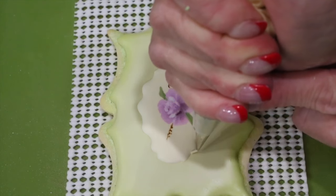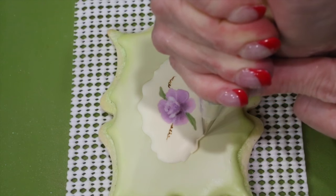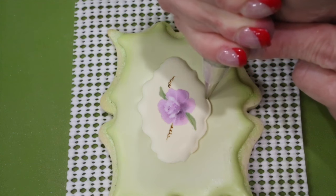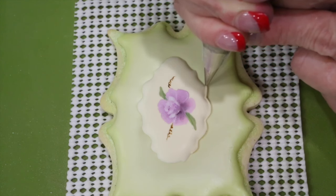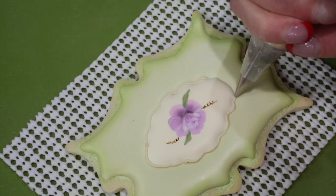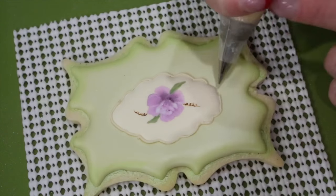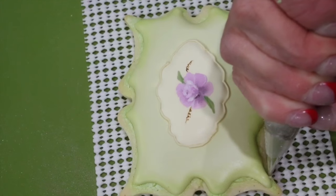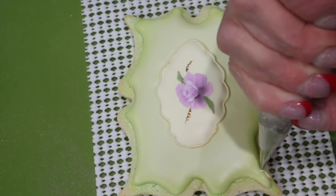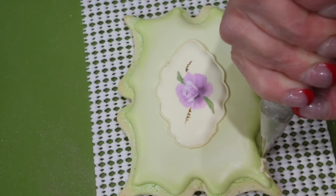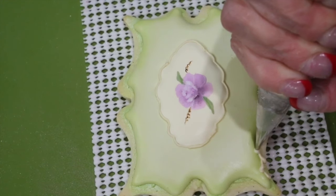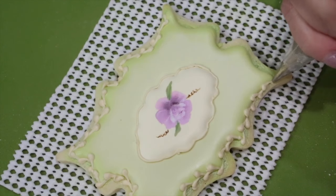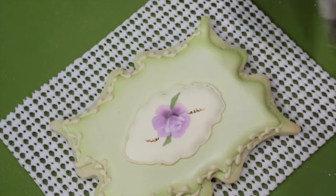Now with the number one piping nozzle and stiff consistency icing, outline the inner plaque. Now add your decorative border which is an offset heart border. Follow the lines of your plaque.